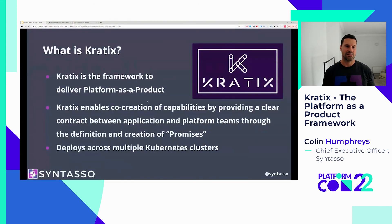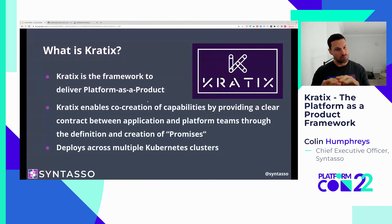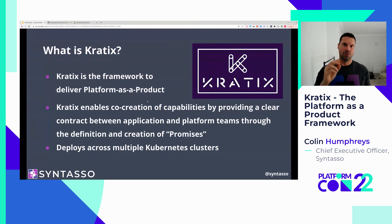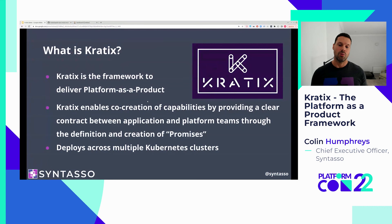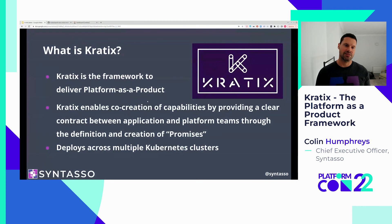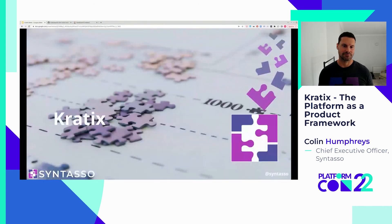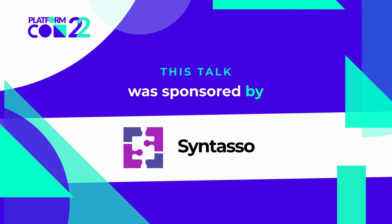In summary, Kratix is the framework to deliver platform as a product. You deploy Kratix across multiple Kubernetes clusters and compose your platform from promises which you load into Kratix. The example promise we loaded was for Jenkins — we deployed Kratix, loaded a Jenkins promise, and consumed that Jenkins promise as an application team member. If you have any questions, please contact me at syntasso.io. Thank you very much for your time today.